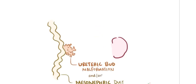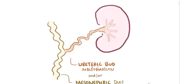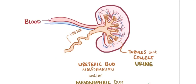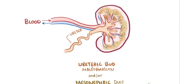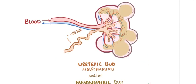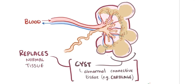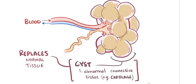Regardless of the cause of the failure, the ureteric bud is supposed to go on to form the ureters, as well as the rest of the tubules that branch out to collect urine. So as blood starts coming in to be filtered, and urine starts getting produced, a failure to properly develop into these urine-collecting tubules means that the urine has nowhere to go, and so it builds up in the kidneys and forms these fluid-filled cysts that are composed of abnormal connective tissue, especially cartilage, that actually replaces normal kidney tissue and decreases the kidney's ability to function.